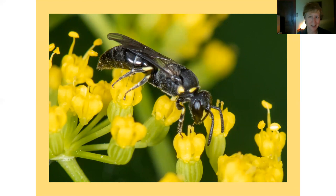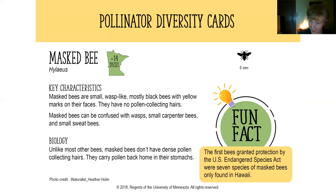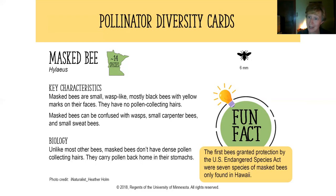Next is the masked bee — a small bee that isn't very fuzzy and is mostly confused with wasps. There are 14 different species in Minnesota; they're mostly black with yellow patterns on their face. Uniquely, masked bees have no pollen-collecting hairs — they carry pollen back home in their stomach and regurgitate it to feed their young. A notable fact: masked bees were the first bees granted protection under the U.S. Endangered Species Act — specifically seven species found only in Hawaii.